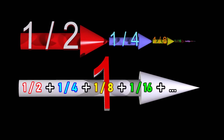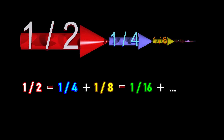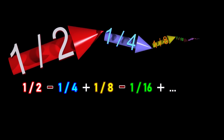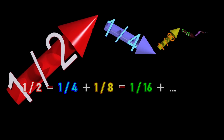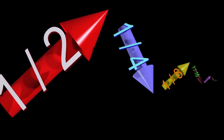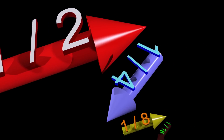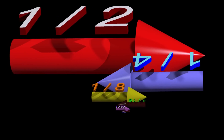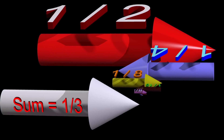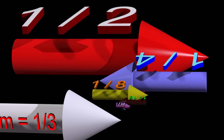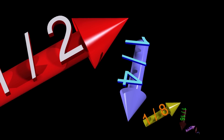Let's now change this by multiplying every other number in the sequence by negative 1. We now get a new sum. In this example, we say that this series converges absolutely, because when all the values were positive, the series still converged to a finite value.